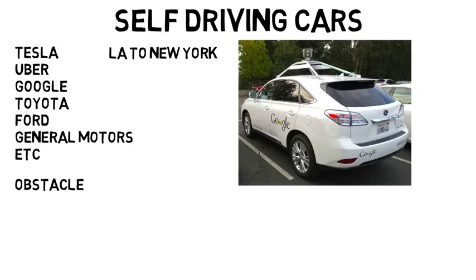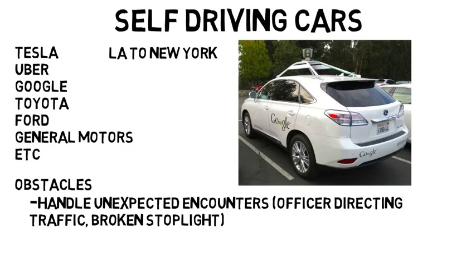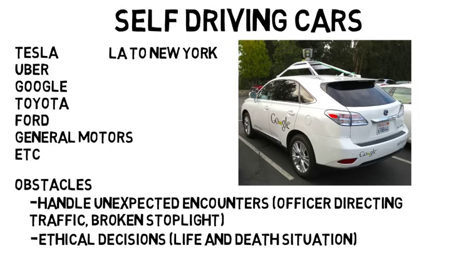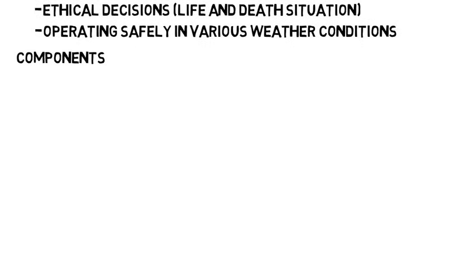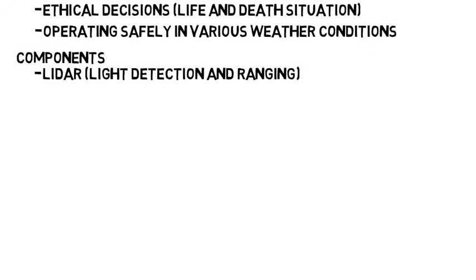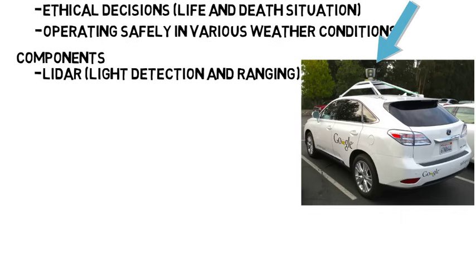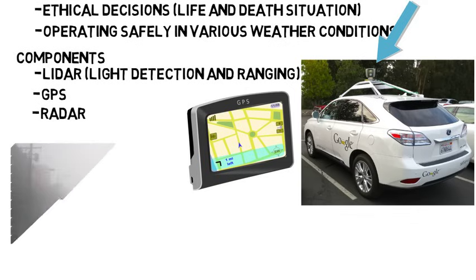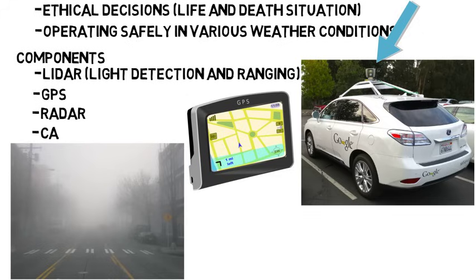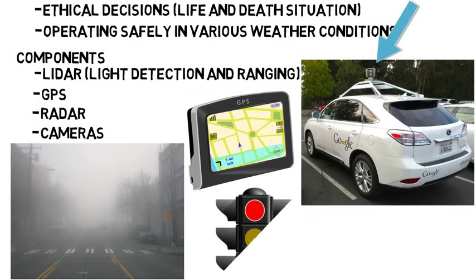There are plenty of obstacles, like being able to sense unexpected encounters such as an officer directing traffic or a broken stoplight, dealing with ethical decisions in life-and-death situations, and operating safely in various weather conditions. Self-driving cars have many components — there's LIDAR (Light Detection and Ranging), which uses light to detect surroundings, as seen on top of the Google car. There's GPS for navigation, a radar system that maps surroundings using lower frequency waves than light, which works in heavy fog unlike LIDAR, and cameras that read the road, surroundings, and traffic lights. Research is going into combining all these components to make a safe self-driving car.